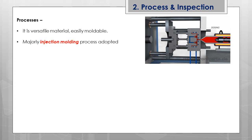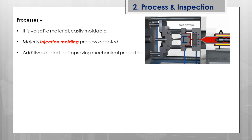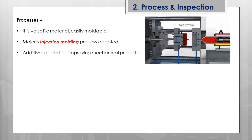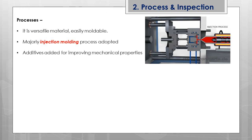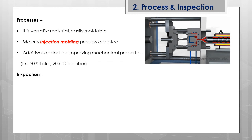PP products are normally added with various additives to improve mechanical properties and meet end application requirements. For example, 30% talc powder or 20% glass fiber may be added for improving strength, impact resistance, and stiffness. Adding additives is a standard part of PP processing to meet specific end applications.